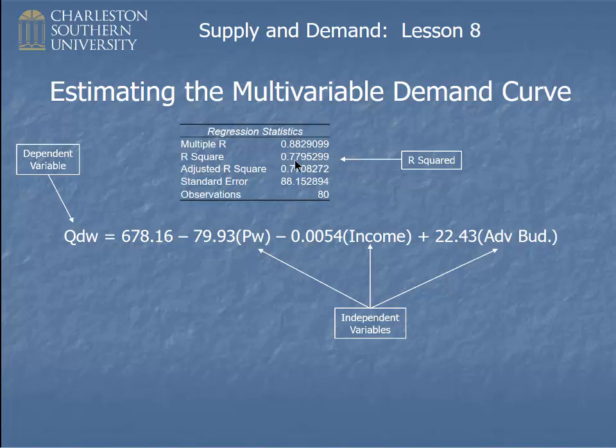about 78% of what's happening to the dependent variable, 78% of ups and downs in this data from that spreadsheet, is explained by what's going on with the price of widgets, income, and the advertising budget. So about 78% of this is explained by that, which means, of course,